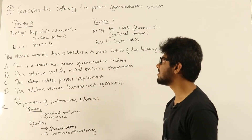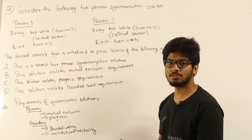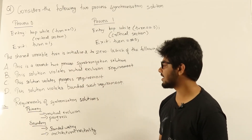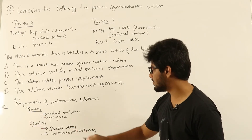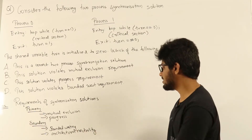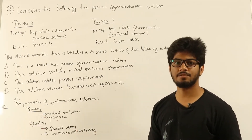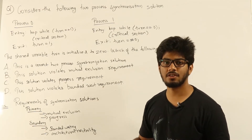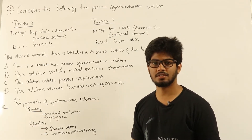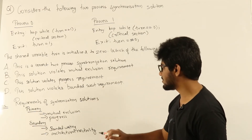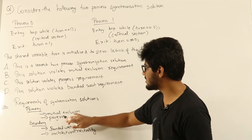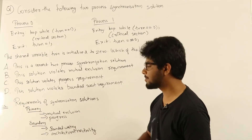Bounded waiting means any process should not have to wait indefinitely in order to enter the critical section — no process should be stopped from entering the critical section indefinitely. Architectural neutrality means our solution should work on any platform, irrespective of the operating system or the processor. But mutual exclusion and progress are the ones we absolutely need.